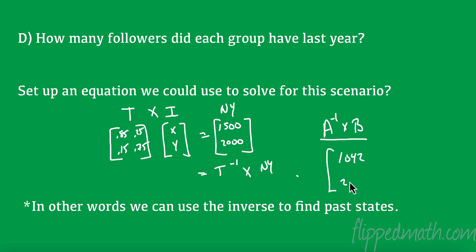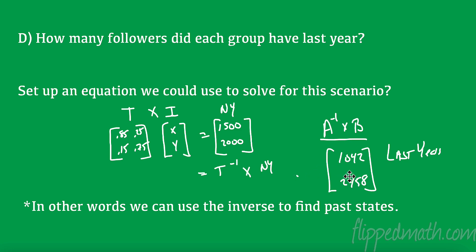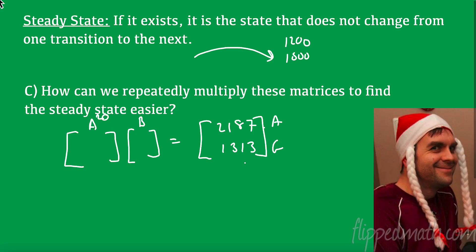One important note: you can't raise the transition matrix to a negative exponent to go backwards — the inverse doesn't work that way. But if you want to find two years ago, you find last year's vector and then take the inverse again to get one more year back.